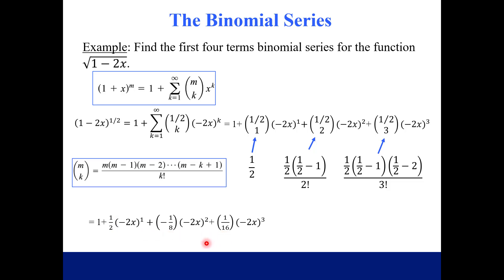Let's simplify just a little bit more. We're going to go ahead and square this term, cube this last term, and then simplify with the coefficients. Our final answer, the first four terms of this binomial series is just one minus x, minus one half x squared, minus one half x cubed.